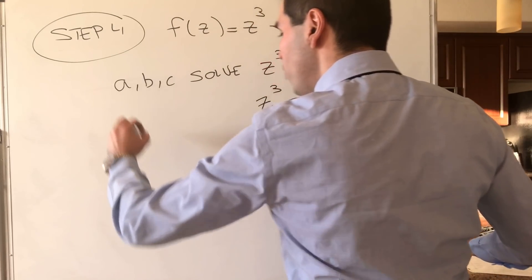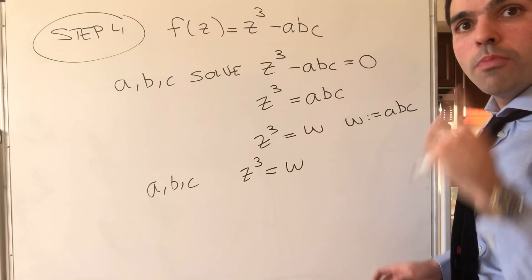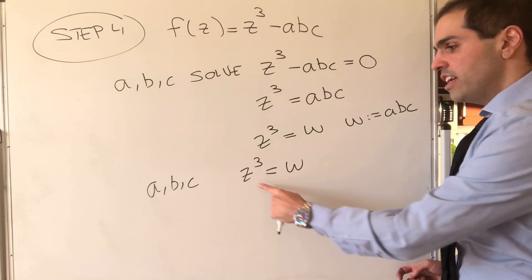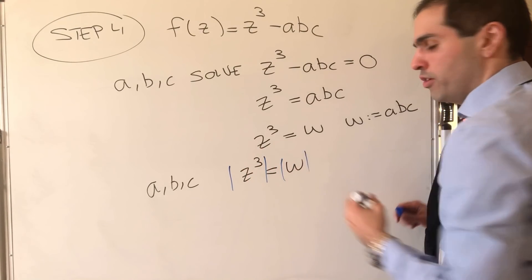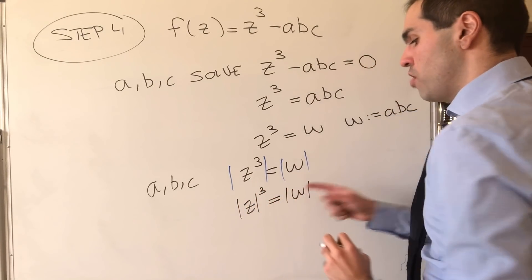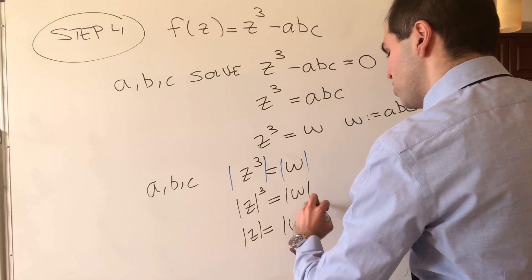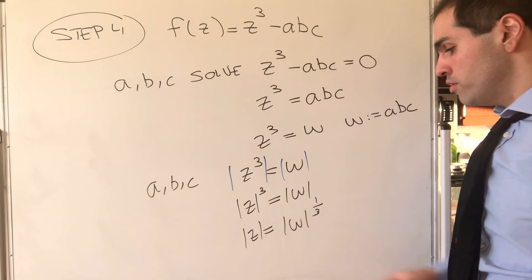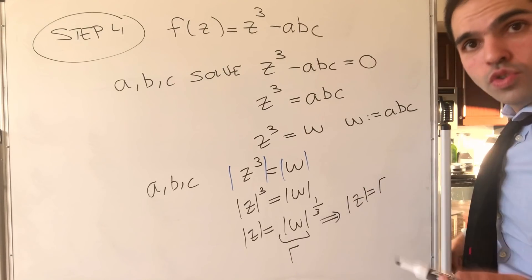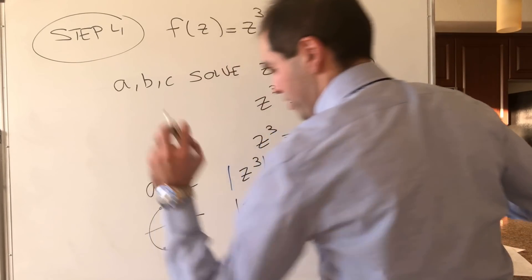But in case that was a bit too fast, let me give you the details. We know that A, B, C solve Z cubed equals this fixed complex number omega. Now let's see where A, B, C are on the complex plane. On the one hand, take the modulus of both sides: the absolute value of Z cubed equals the absolute value of omega. So the absolute value of Z equals the absolute value of omega to the one-third power. Calling this R, we find that A, B, C are on a circle of radius R. And in case you're picky — sure, R could be zero, giving a degenerate equilateral triangle, which is completely acceptable.